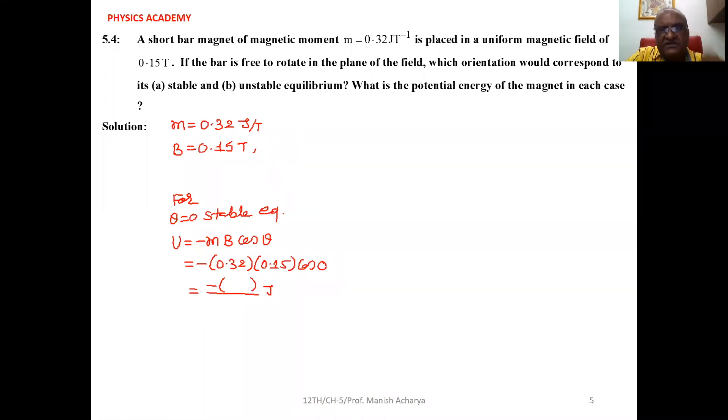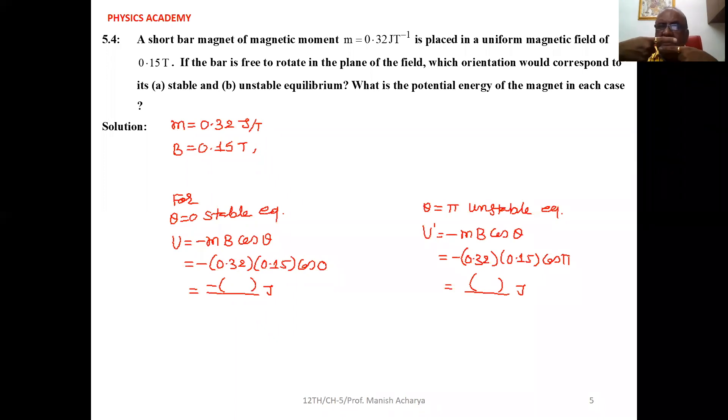For unstable equilibrium, the magnetic moment and external field are in mutually opposite directions, meaning θ = π. In this case, the potential energy U' = -mB cos θ.